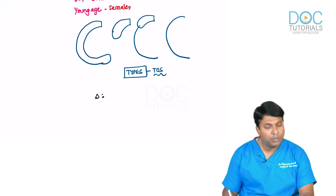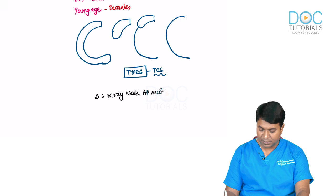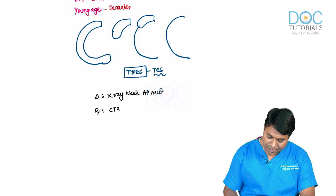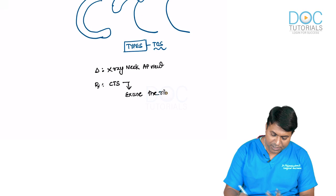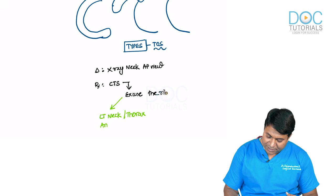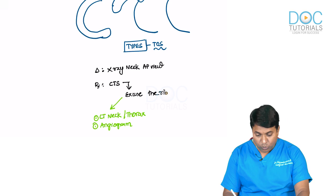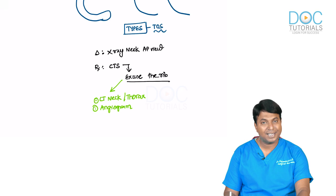Diagnosis of cervical rib is easy — a simple AP X-ray of the neck will demonstrate it clearly. Treatment involves excision of the rib with the help of cardiothoracic surgeons. Pre-operatively, CT of the neck and thorax and an angiogram are performed to plan surgery. Whether it is a fibrous cord or bony rib, complete excision is required.